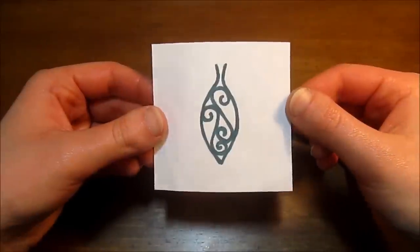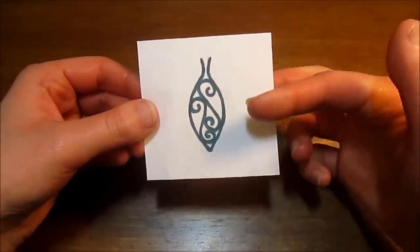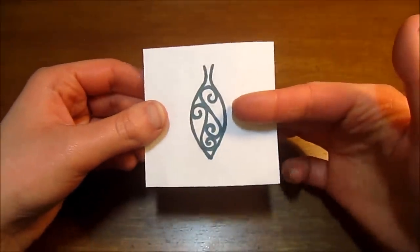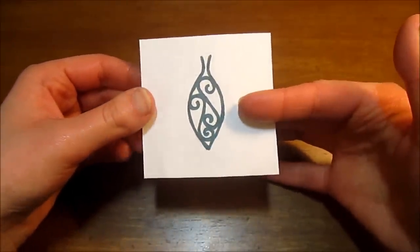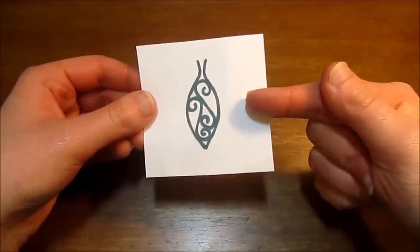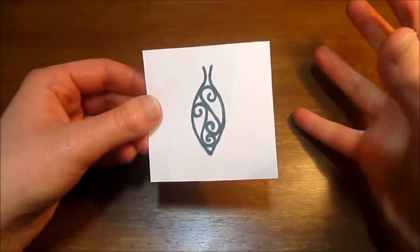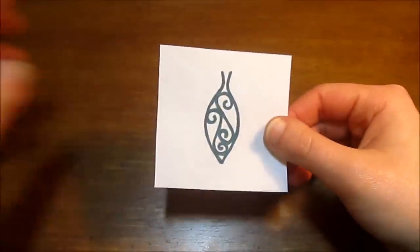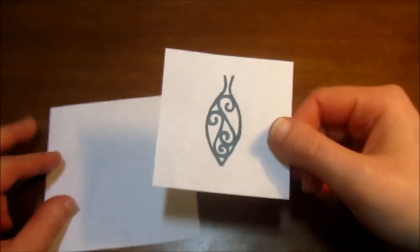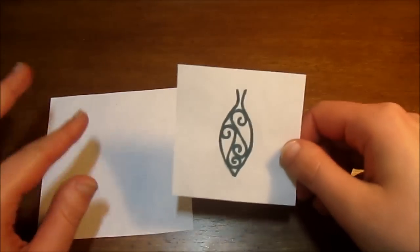So as we get started here, I wanted to let you know that I am going to be referencing this little drawing I have of the pendant throughout the tutorial. Now you don't have to have something like this, but I do find it helpful. It gives you a general guide to follow along with as you're shaping the wires. So I thought I'd show you very quickly how you can sketch something like this out if you wanted to do that.